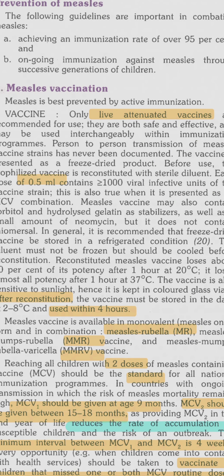The measles vaccine is a live attenuated vaccine administered subcutaneously or intramuscularly. The dose is 0.5 ml. This strain is known as the Edmonston-Zagreb strain.